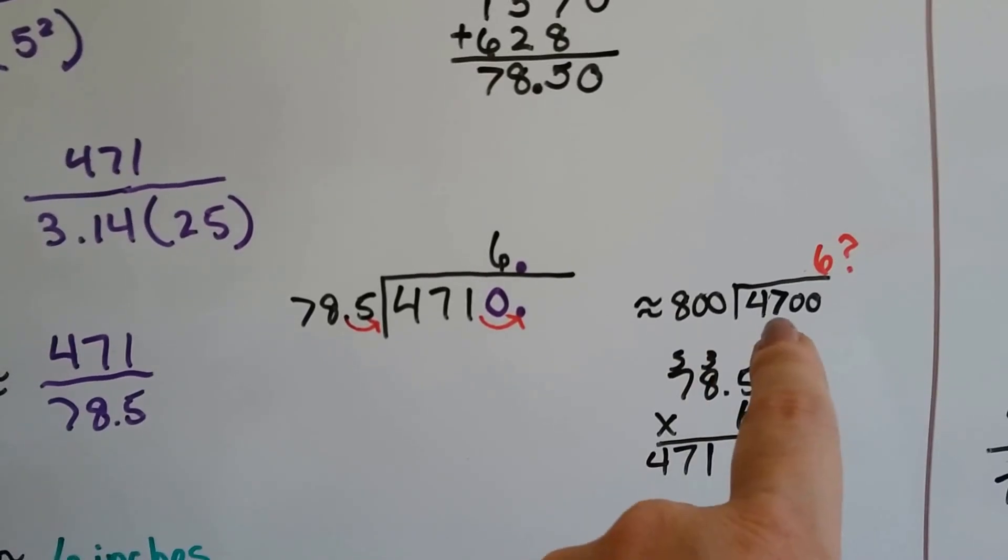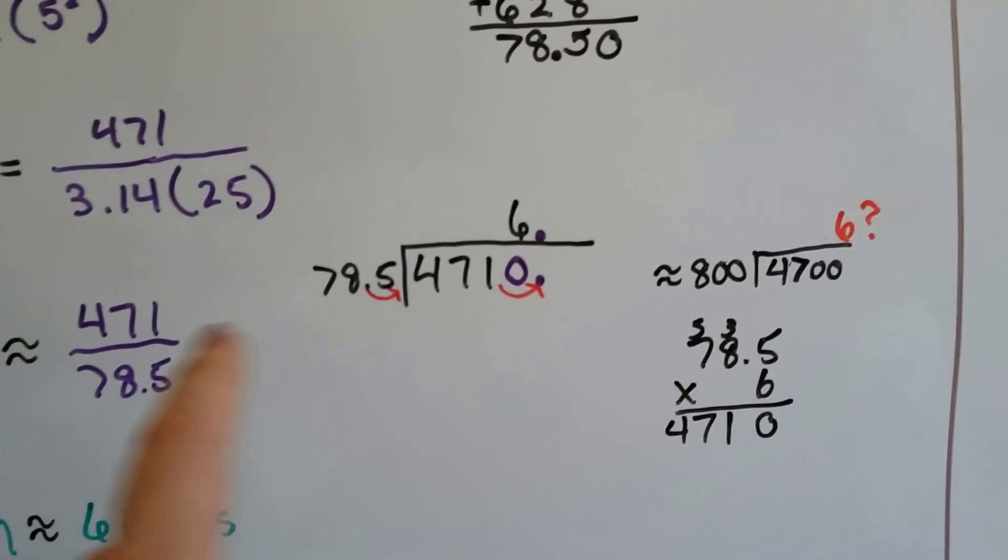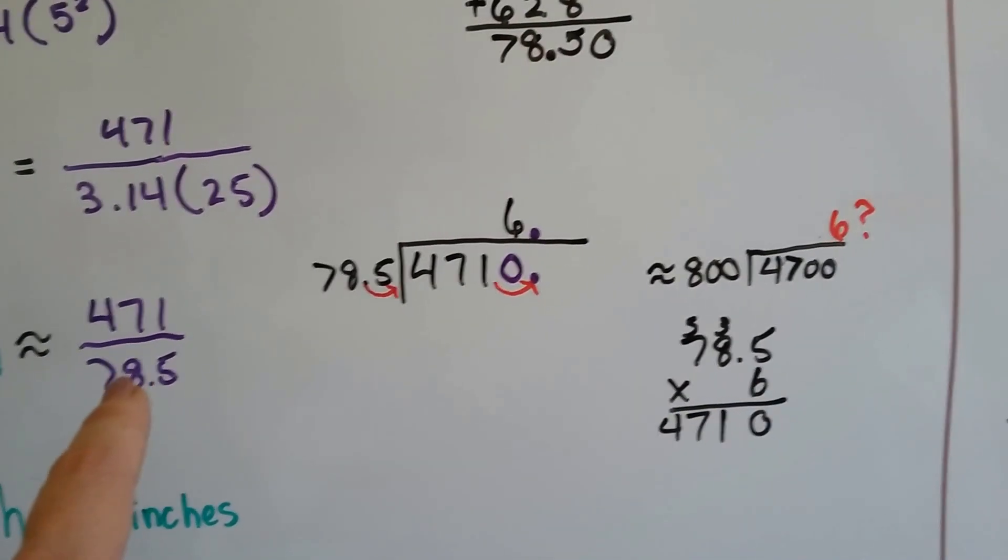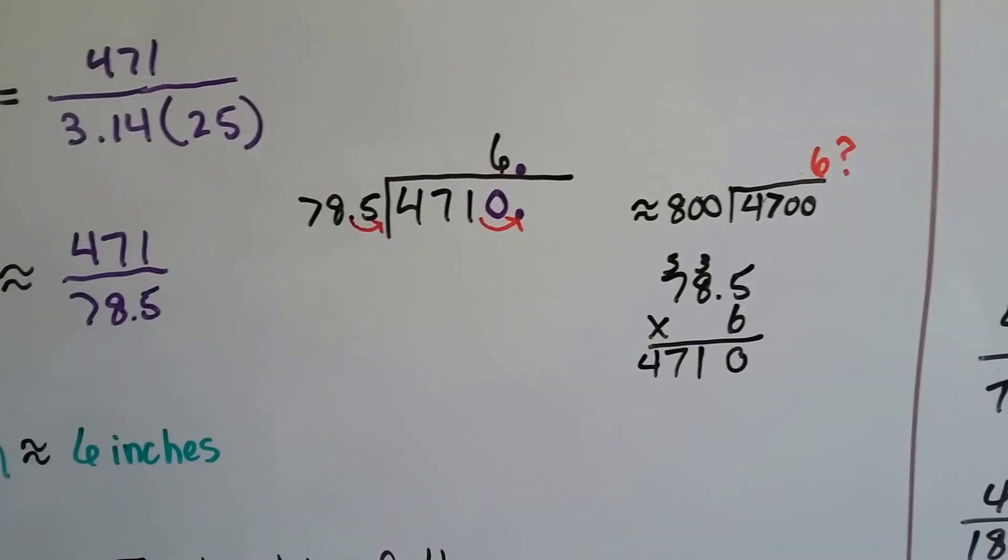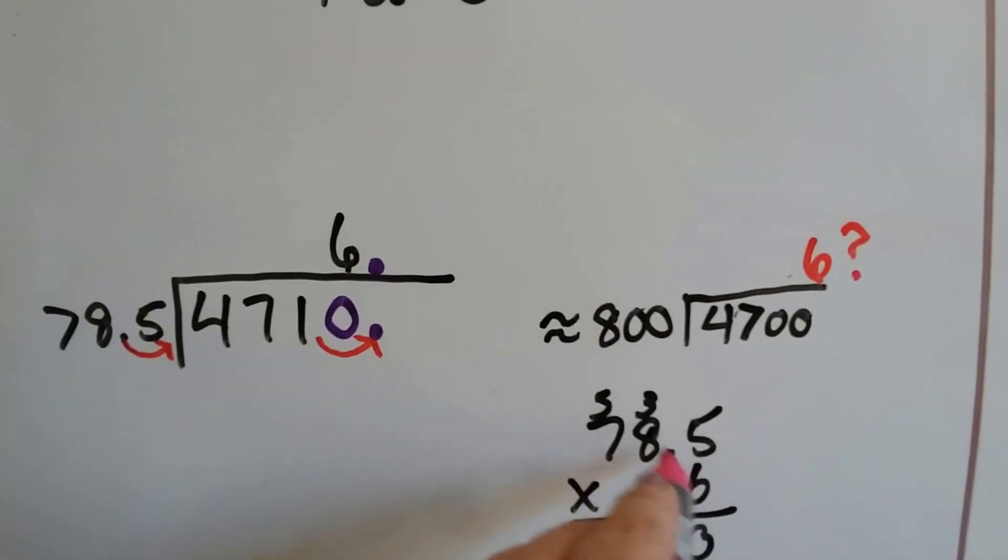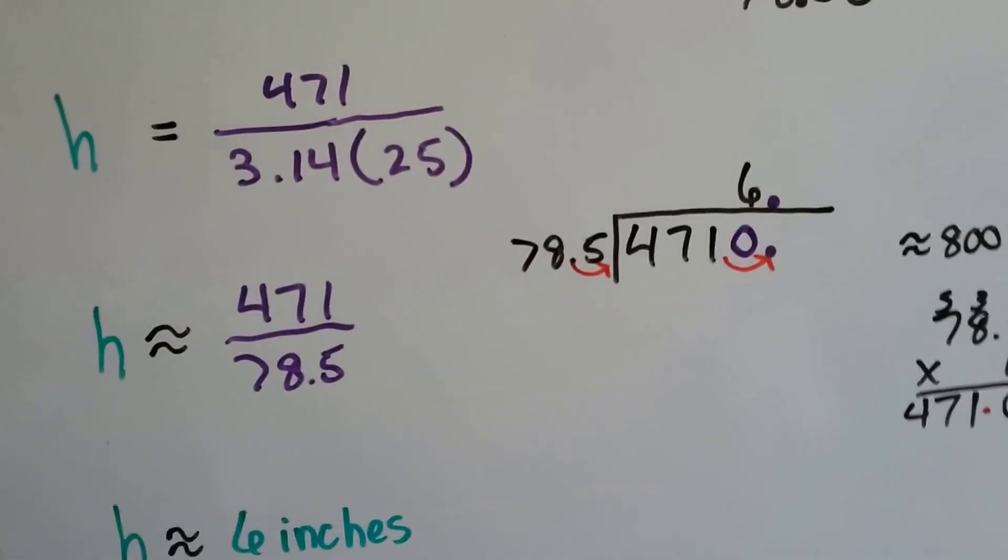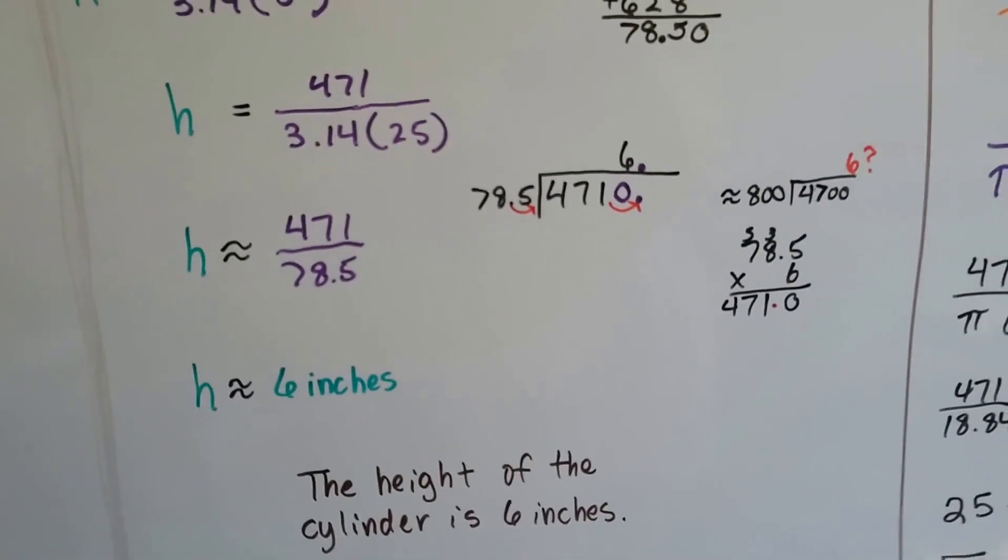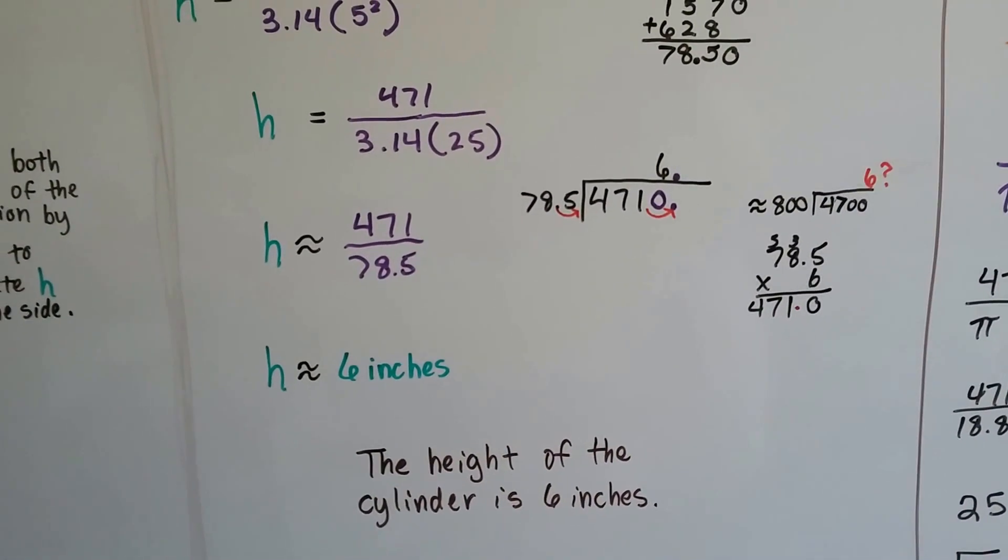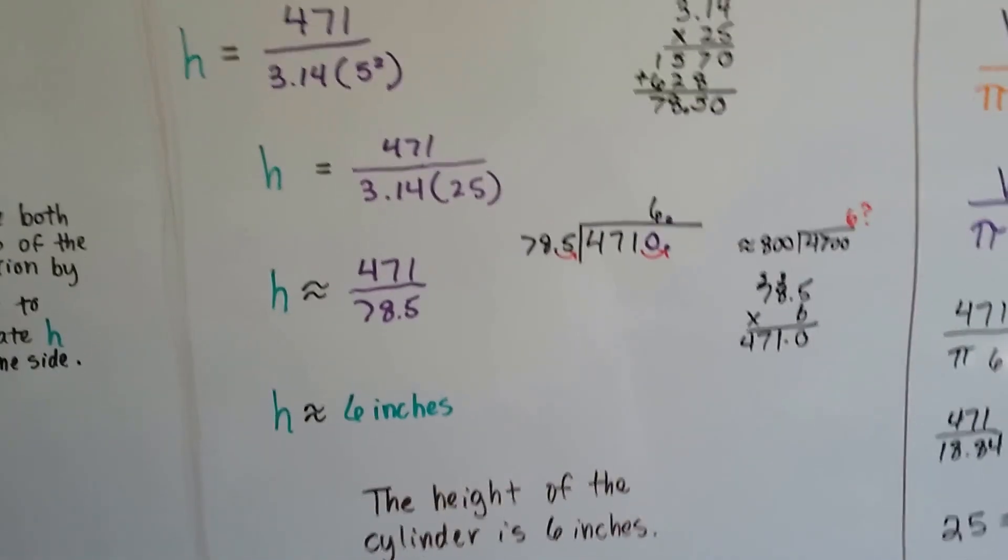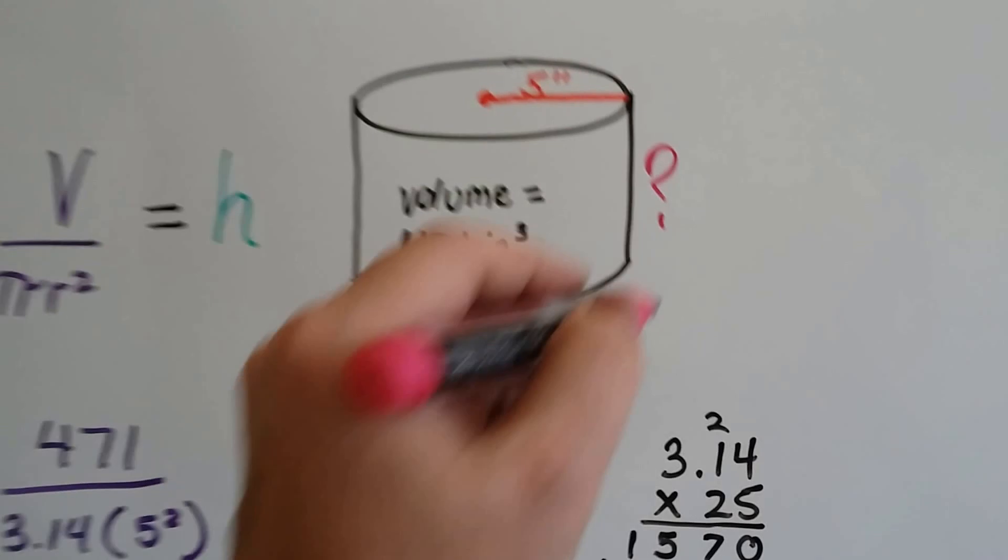I know 6 times 8 is 48, so I think it's around 6 times. So now I'm going to multiply my 78.5, my original number, times 6. And I get 471. There's one decimal point there, so there's one decimal point there. So I have 471. So I know my height is 6 inches. The height of the cylinder is 6 inches, because we divided the volume by π times the radius squared.